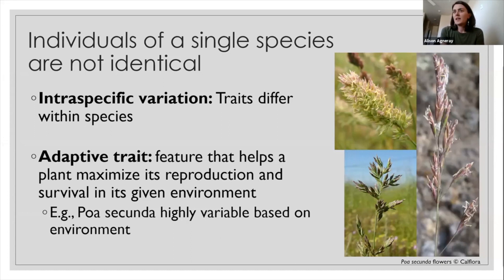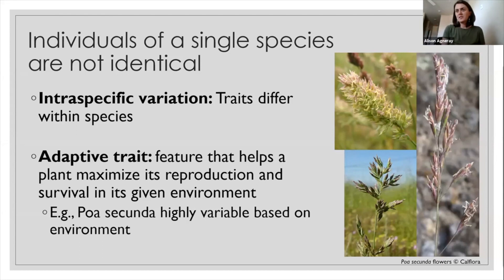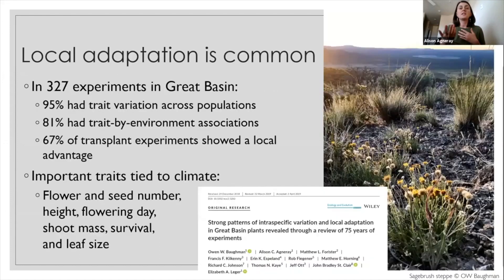As we've been hearing all day, there's a lot of variation between populations of the same species. Plants in particular are famous for their intraspecific variation, like Poa secunda and its many varieties here in the Great Basin. Many of these trait differences have been directly linked to plant survival and arise from local adaptation, which is really common in the Great Basin. And if you were here for Owen's first talk this morning, you've already seen the results of this recent article we put out finding how broadly common local adaptation is here.